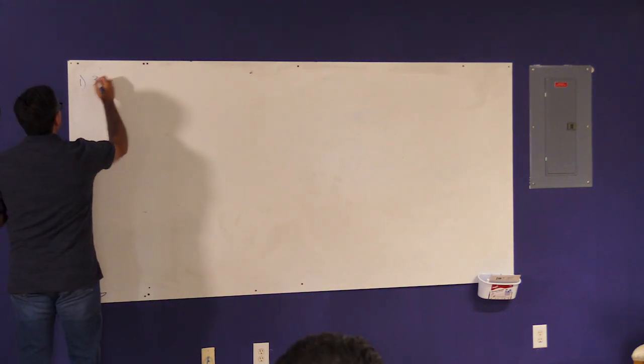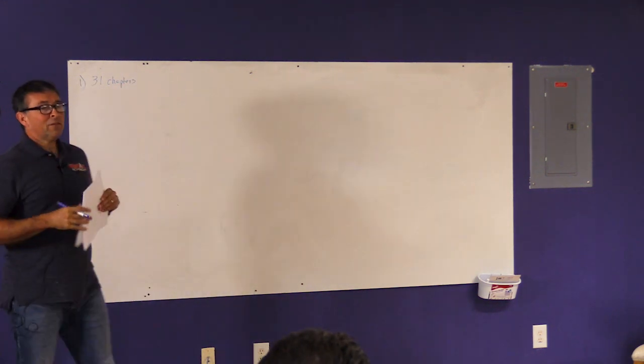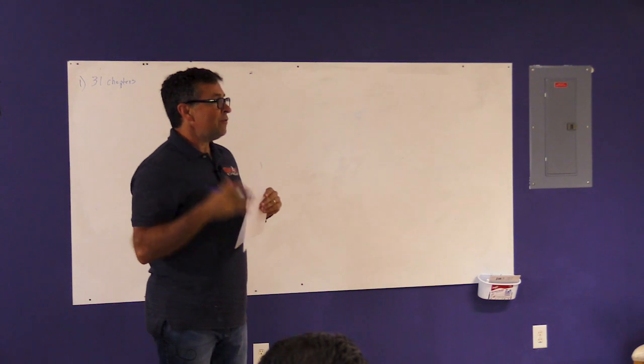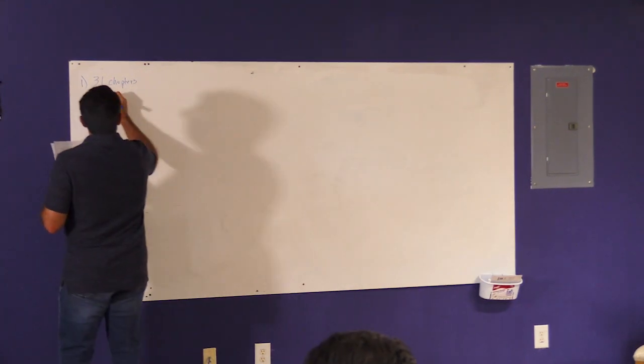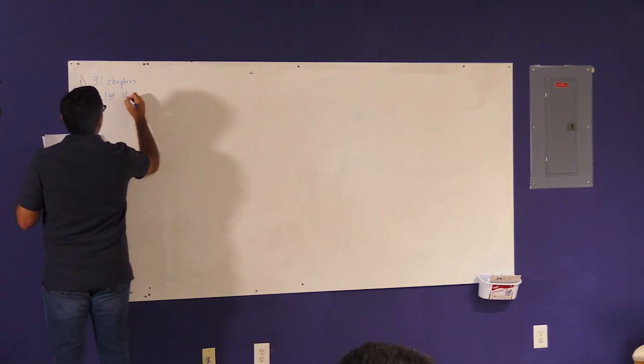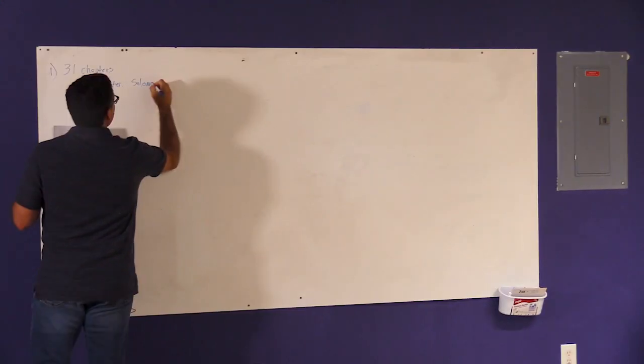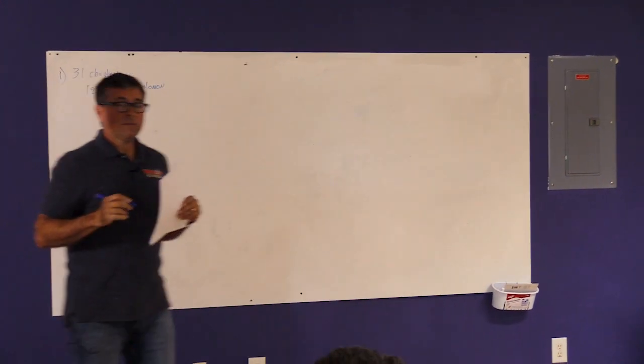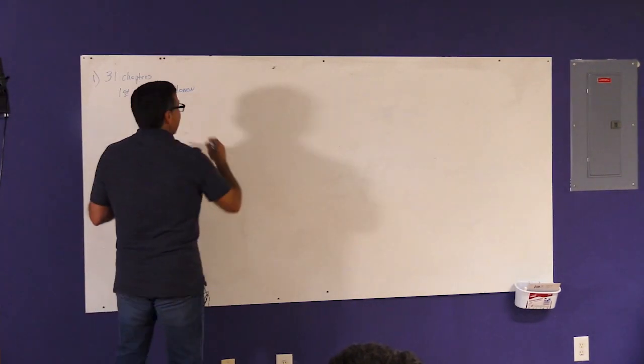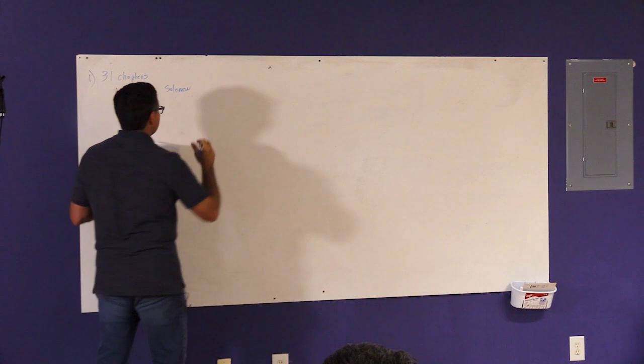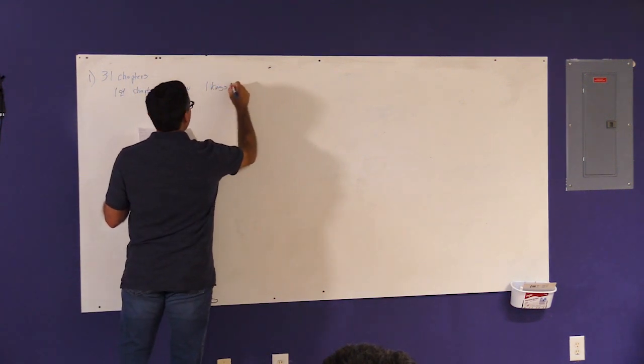So I'm going to do the impossible. I'm going to summarize chapters 1 through 29 of the book of Proverbs in about 25 minutes. If you look at it, it's got 31 chapters. The first part of it attributes a lot to King Solomon. It references 1 Kings chapter 4.